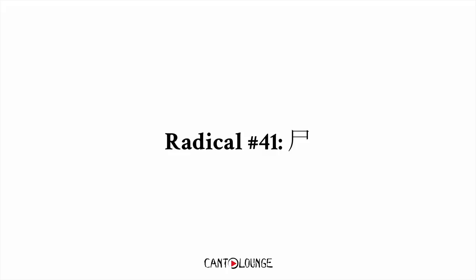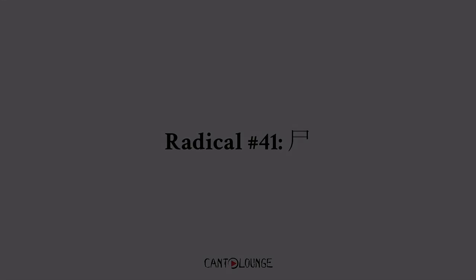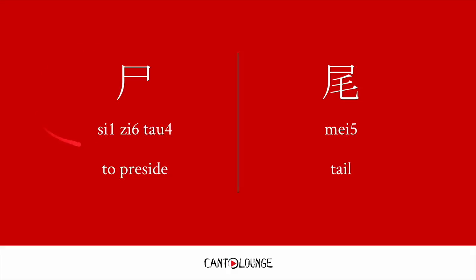Welcome back to this series of videos on Radicals. In this video, we're going to continue with Radical 41, which is 西 — 西字頭. 西 means to preside, but it's also a stand-alone simplified character which means corpse. For example, this character 尾, meaning tail.